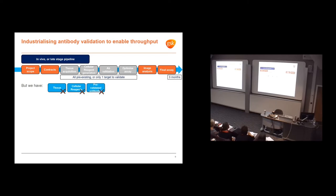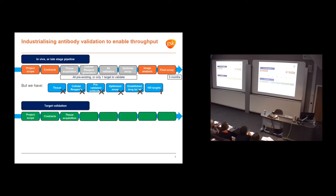The problem in our department now is that genetic targets can be in any tissue, any disease. We don't have cellular reagents. Nobody's bothered to generate them previously. We don't have antibodies, no optimized assay, not an established drug target. We've also got 100 targets to work on, and we've been asked if we can do it in three months as well.